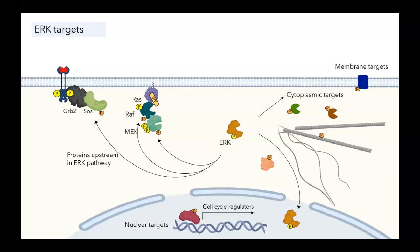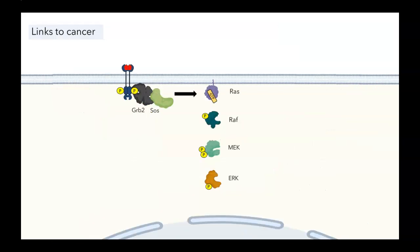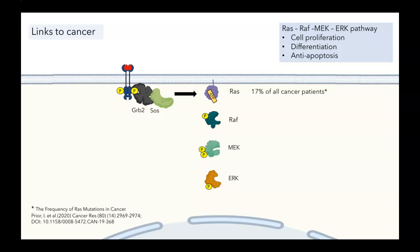I just said that activation of this pathway could lead to cell growth and proliferation. Indeed, the RAS-RAF-MEK-ERK pathway is linked to cell growth and division, differentiation, and anti-apoptosis, the inhibition of programmed cell death. So if the normal function of RAS and MEK is to promote cell growth and prevent death, you won't be surprised to learn that mutations in the players in this pathway are linked to cancer. In fact, RAS is linked to more than 30 different types of cancers. A recent meta-analysis showed that 17% of all cancer patients carry a mutation in RAS.